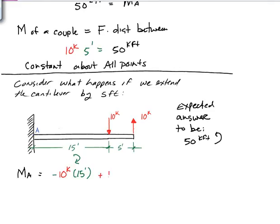Plus 10 kips times 20 feet. And that's positive because it's going in a counterclockwise sense. And if we do the math on here, Ma is equal to minus 150 kip feet plus 200 kip feet is equal to 50 kip feet.